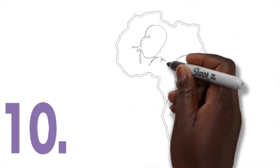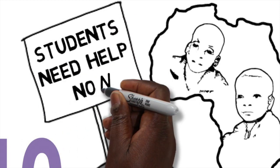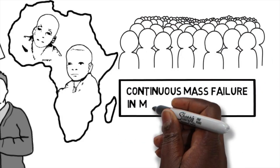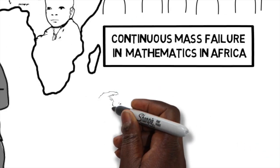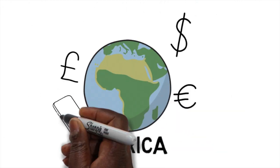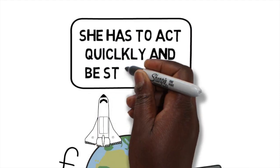Ten, the most important reason why you should get the 1-2-3 of maths is simple. Students need help now. There is continuous mass failure in mathematics in all levels of education in Africa, and we can't afford to only use the traditional methods of instruction any longer. The definition of insanity is doing the same thing over and over again and expecting different results. If Africa is to make its mark technologically in the global marketplace, she has to act quickly and be steadfast.